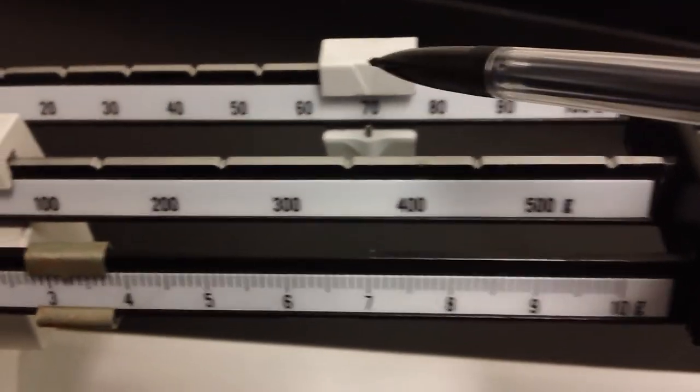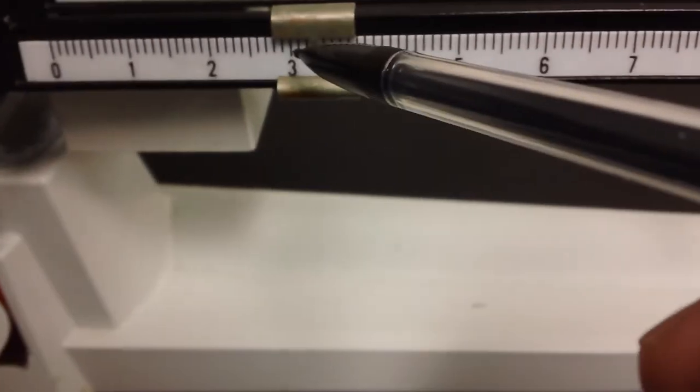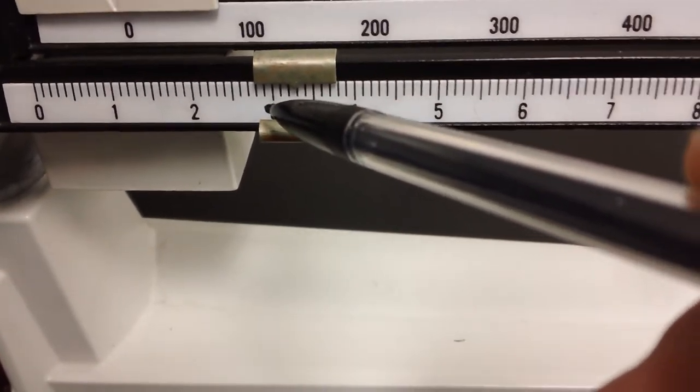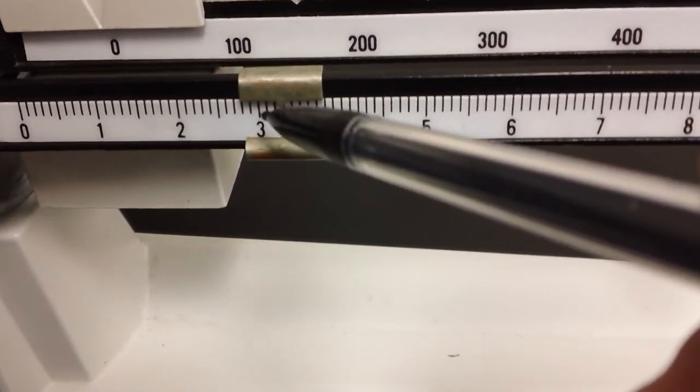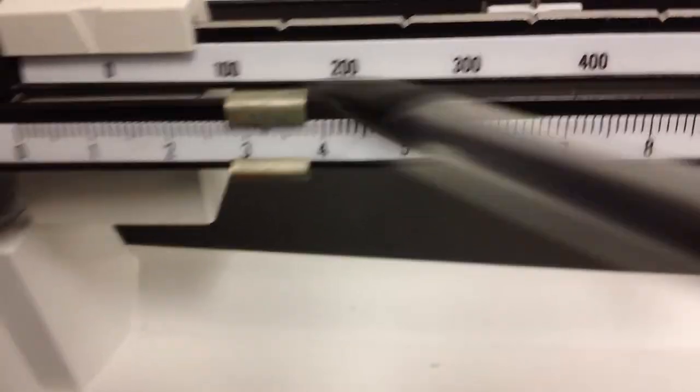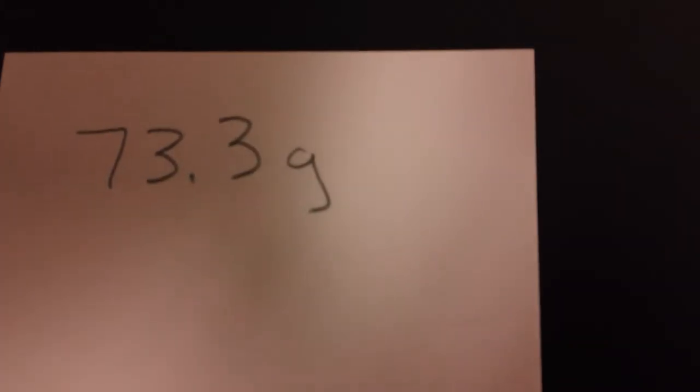So again, what I did is I took the 70 that I have on this counter mass plus the 3, and then, but I'm not quite done. I have to put a decimal and then 0.123 grams. So my final mass for this object, this block right here, we would say that it is 73.3 grams.